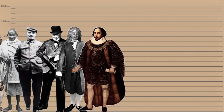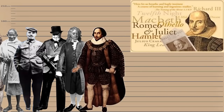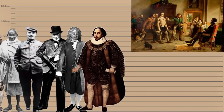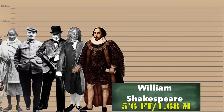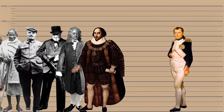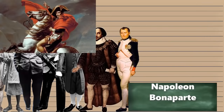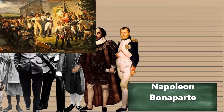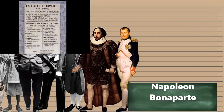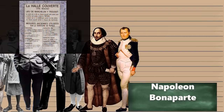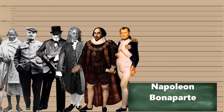Then we have the English poet, playwright and actor, widely regarded as the greatest writer in the English language and the world's greatest dramatist — William Shakespeare also stood at 5 feet 6 inches. Napoleon Bonaparte, a French statesman and military leader who rose to prominence during the French Revolution — the misconception that he was short stems mainly from disparities between the old French measuring system and modern day. According to recent studies, he was 5 feet 6 inches.